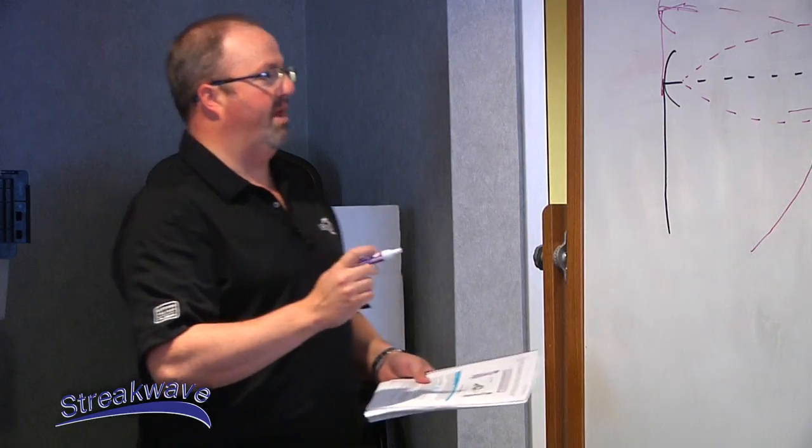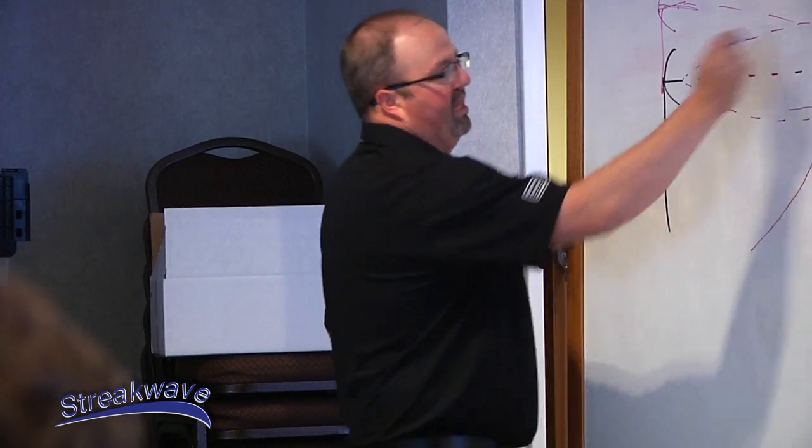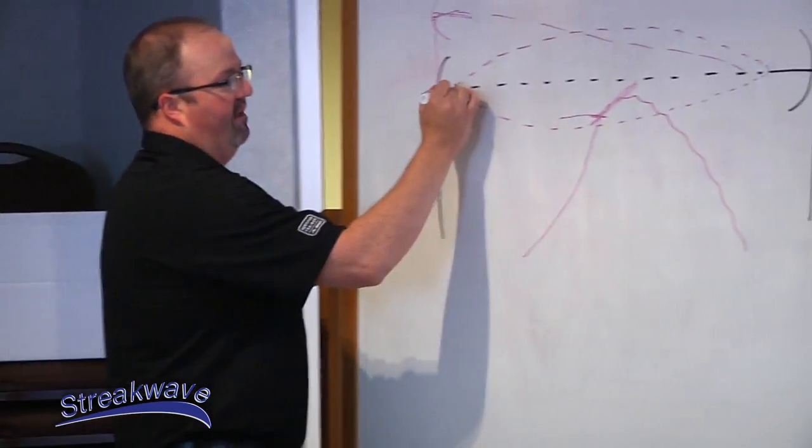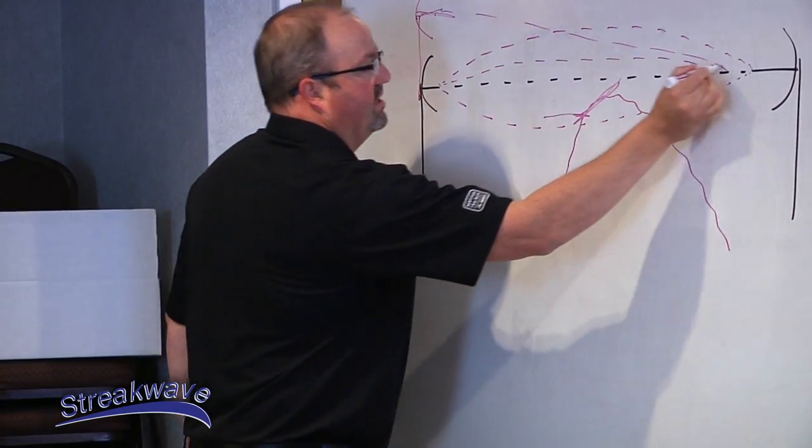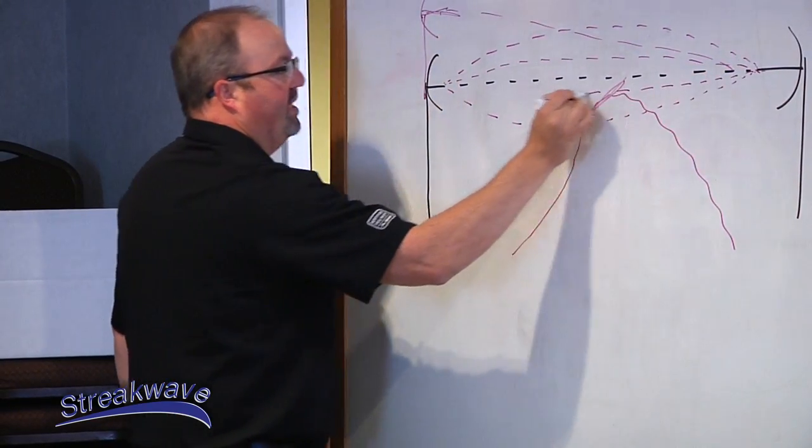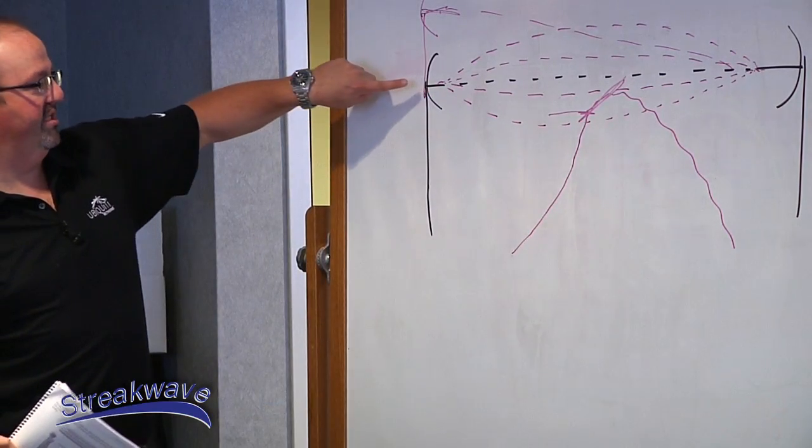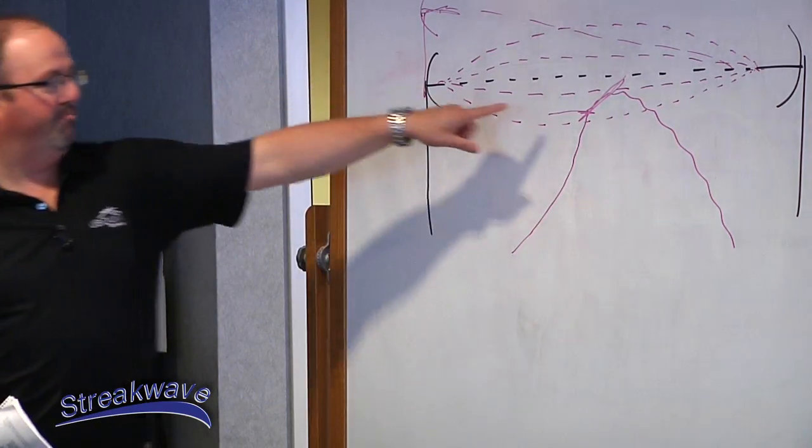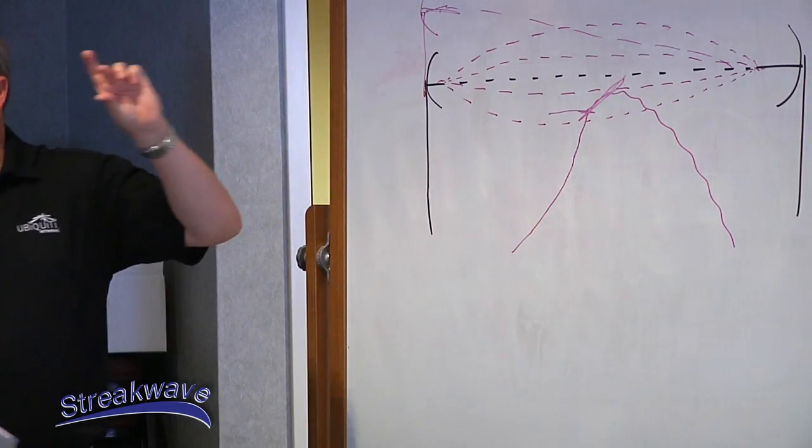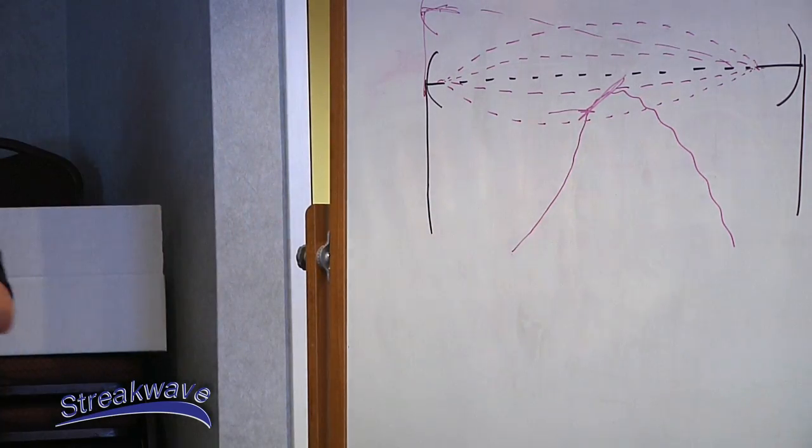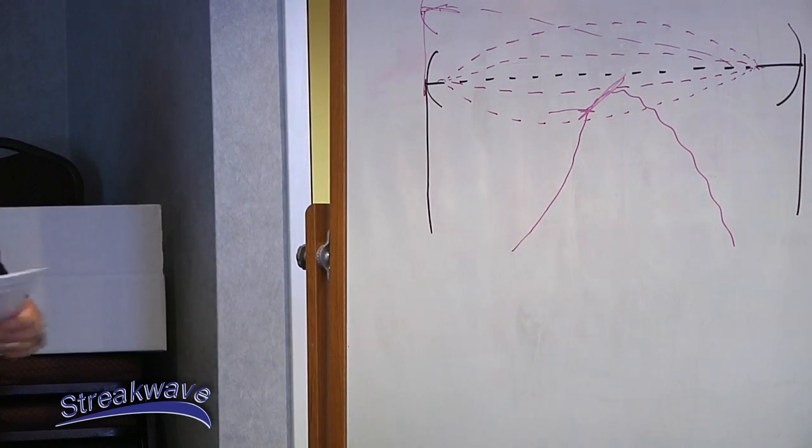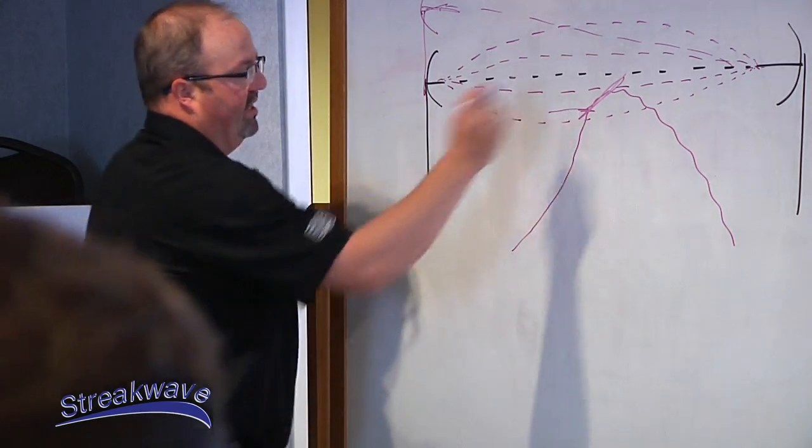So 5.8 is, so if this would be like a 900 megahertz signal and a 5.8 would be like this. So you may actually be able to get a 5.8 signal to go on this link and it would bypass this mountain because the Fresnel zone is a lot thinner. As you go into the lower frequencies, your Fresnel zone expands even greater. So 900 megahertz, you can bet it's probably going to hit that.